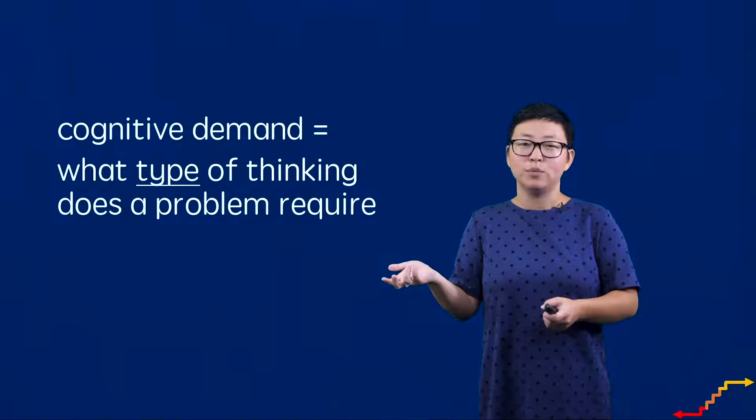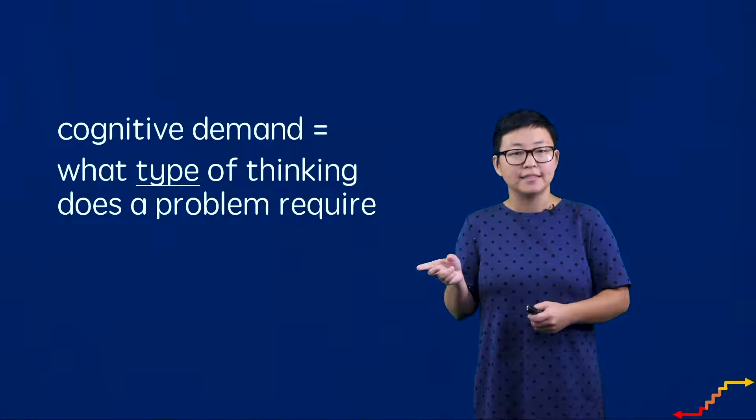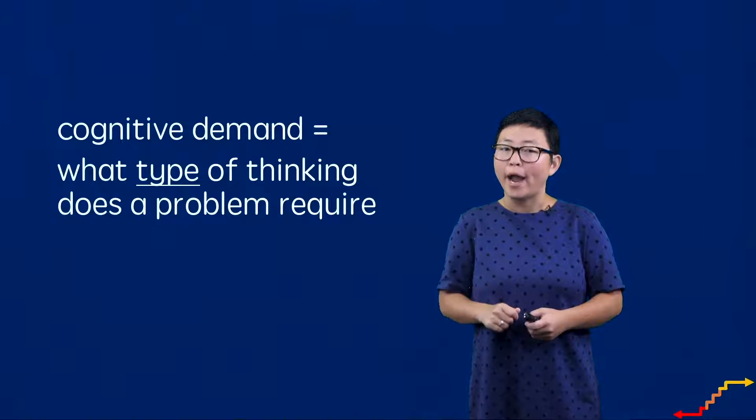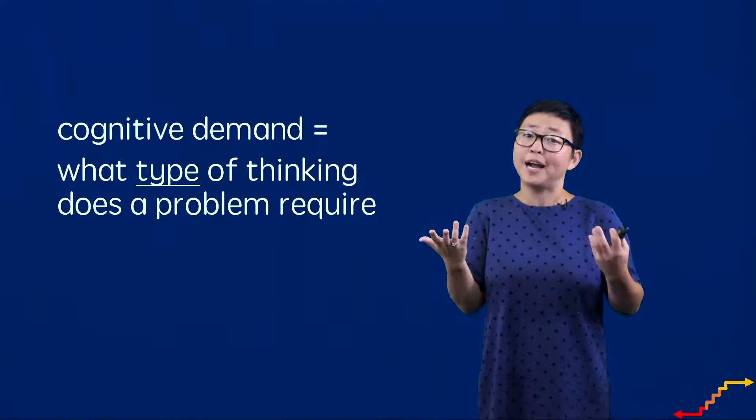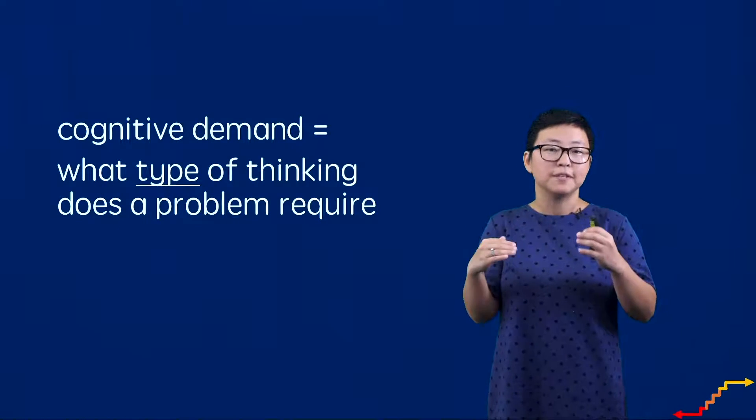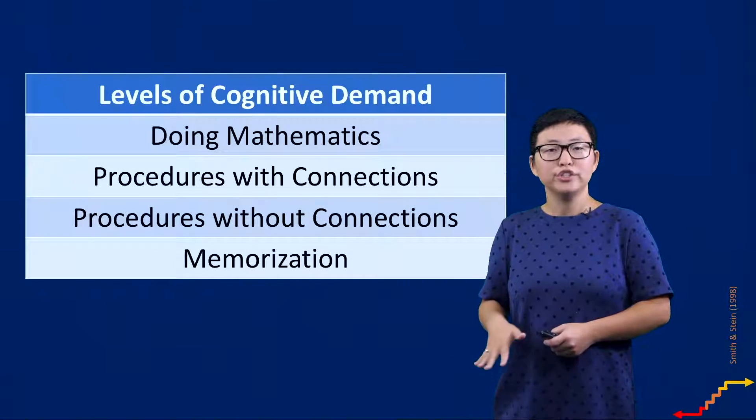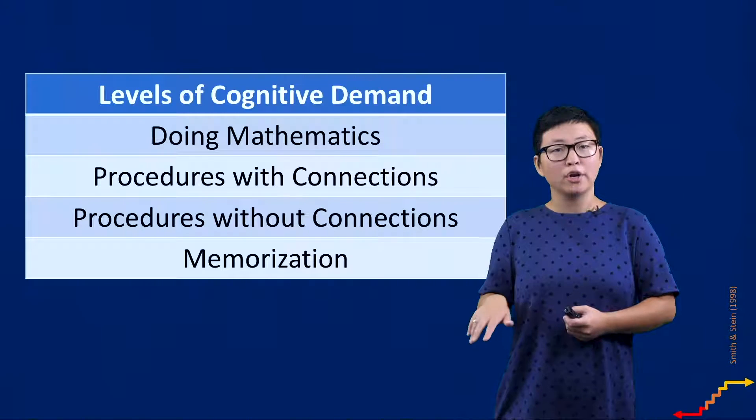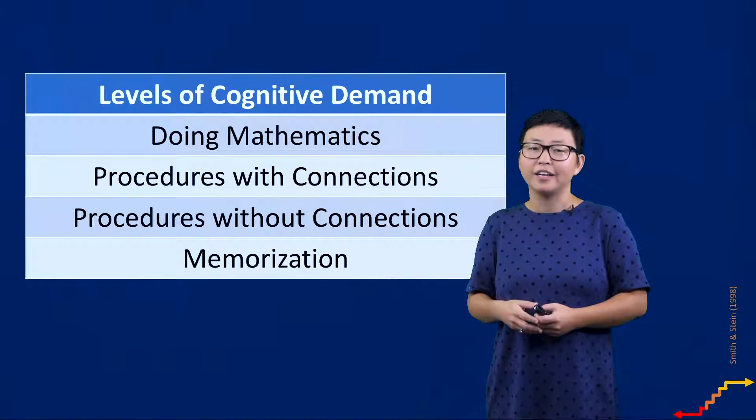Let's also consider what I mean when I'm talking about the cognitive demand of a task. I'm really asking us to think about the type of thinking required to do a problem. Arguably all mathematics problems require some kind of thinking, but we can start to attend to these nuances of the different types of thinking or the kinds of thinking that different tasks require. Researchers in mathematics education, Margaret Smith and Mary Kay Stein, have identified four levels of cognitive demand.